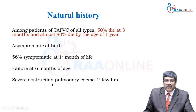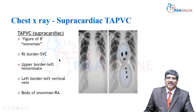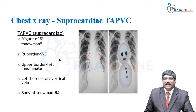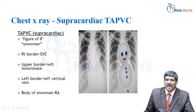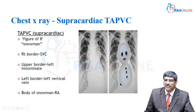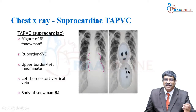In severe obstruction, pulmonary edema happens within one to two hours. Coming to the imaging modality, in the chest X-ray, you have a few classical signs. There is a figure-of-eight appearance, also called the snowman appearance. The right border is formed by the SVC, the left border by the left vertical vein, the upper border by the left innominate vein, and the body by the right atrium.